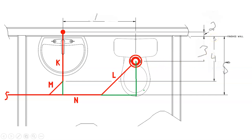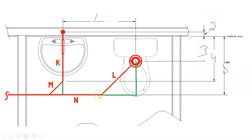Dimension number four goes from the same finished wall all the way out, and if you take that line straight across it lines up with the center of the 45 between M and K. Dimension number five goes from the same finish wall all the way out and down, and if you go across to the left it actually lines up in line with pipe N.